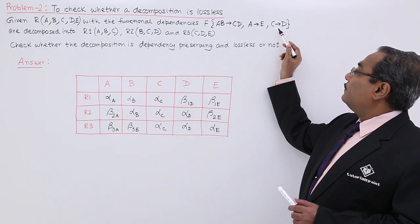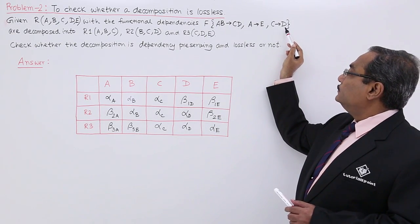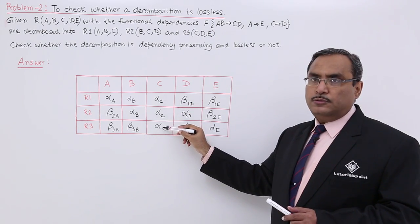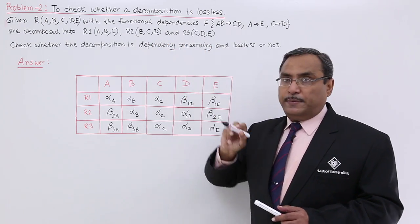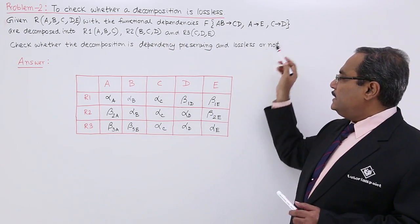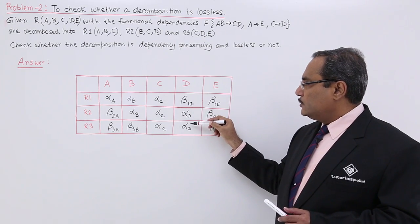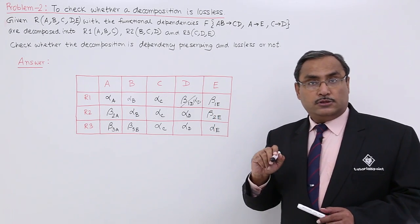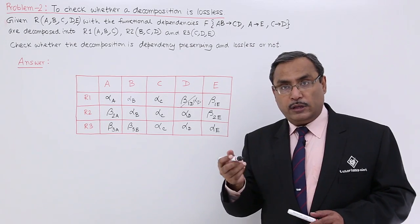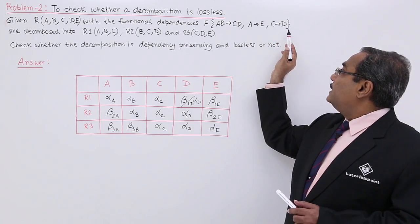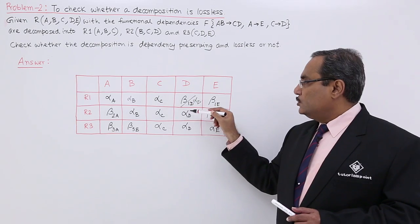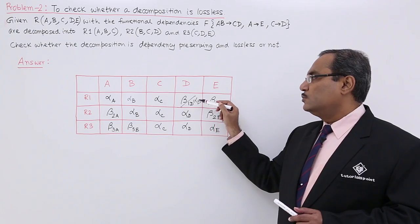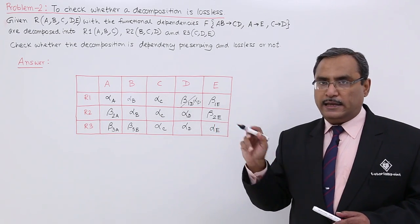Now, let us go for the last one that is C determines D here. Here all the C, they are having the same values because in all cases C participated. Now I shall go for D. Here we are having this alpha here. That is why this thing will be made as alpha. That was mentioned in the respective algorithm also. C determines D. Here all the C values are same. Respectively all the D values must be same as one of them is alpha. All the beta will be replaced by alpha D accordingly.